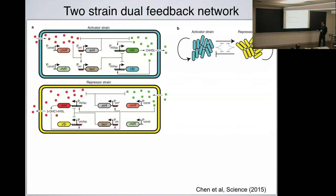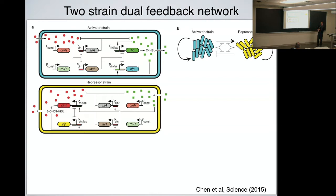So the same circuit is constructed, but separated into two different interacting strains. This activator strain and repressor strain are coupled through quorum-sensing molecules — shown in green and red — that diffuse across the membrane in both directions. Building this took some tinkering. Jake Young later created a relatively large model — 17 delay differential equations — that captured in detail the interactions between components in these two strains, and I'll talk about the predictions of this model.